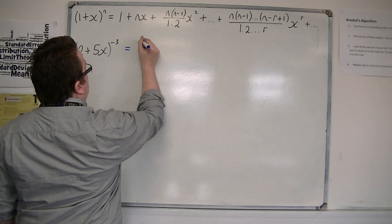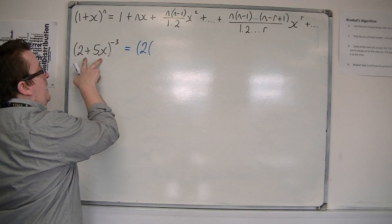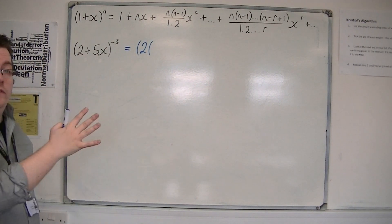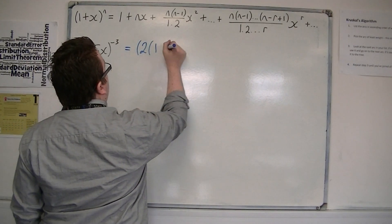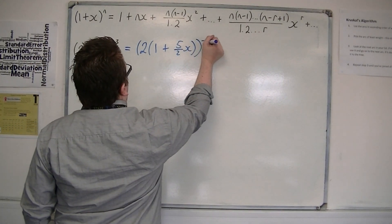First of all, you must take 2 out of what's inside the bracket, so effectively factorizing it, so we get (1 + 5/2 x) all to the minus 3.